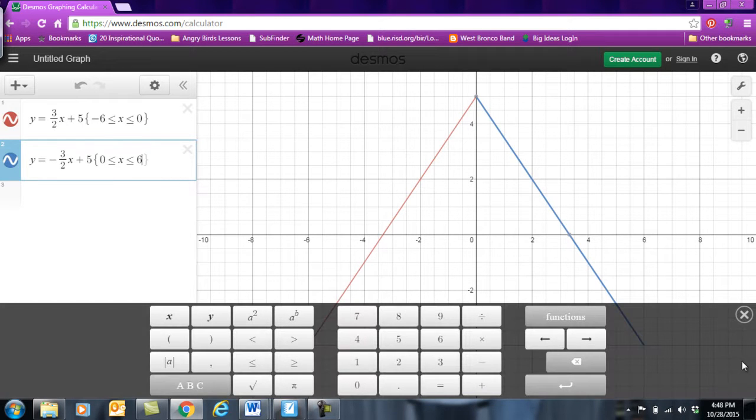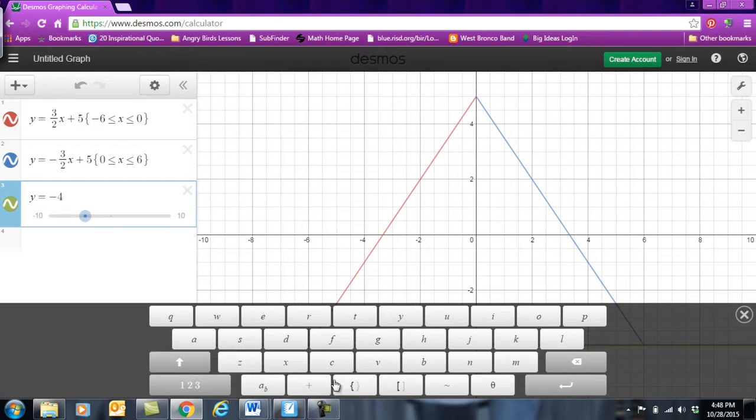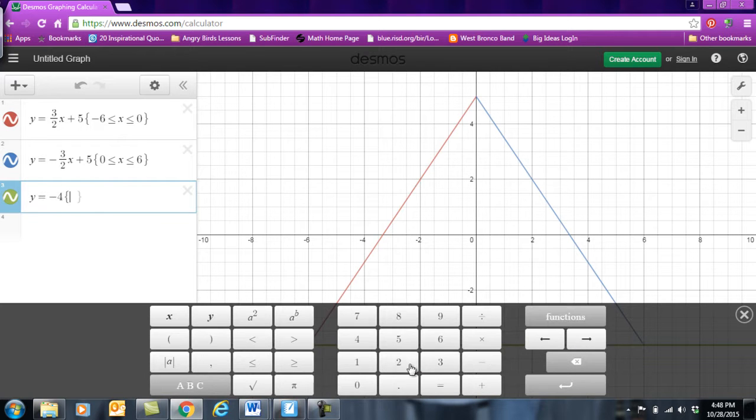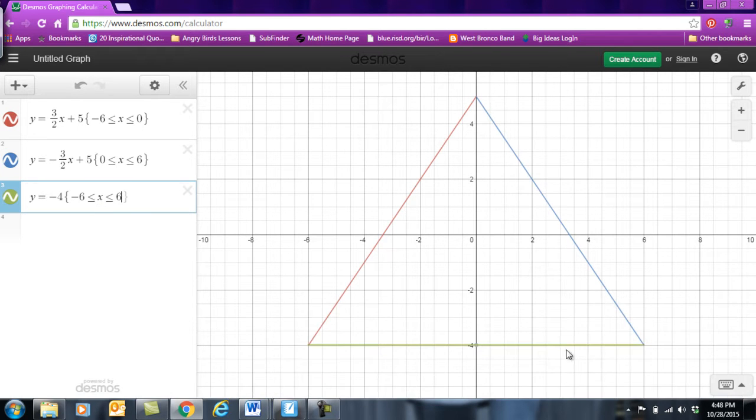And so now I'm just going to hit enter to make a new function. We're going to do our bottom line which was y = -4. And you can't see it because it's down underneath my keyboard but we'll bring it up in just a minute. And we've got to set our domain. So we'll go back here squiggly brackets. And it goes from -6 to positive 6. And so now if I move my keyboard you can see I've made my triangle.